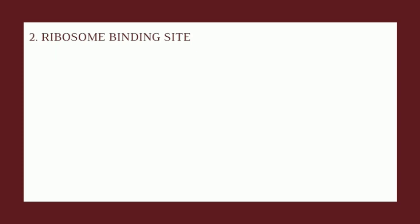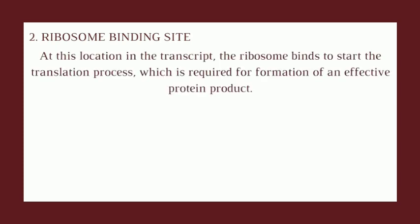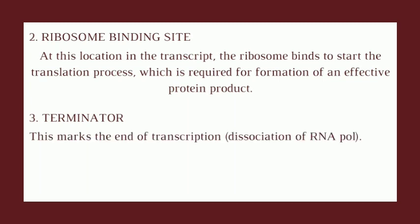The ribosome binding site (RBS) is located in the transcript where the ribosome binds to start the translation process, which is required for formation of an effective protein product. The terminator marks the end of transcription by dissociating the RNA polymerase from the DNA.